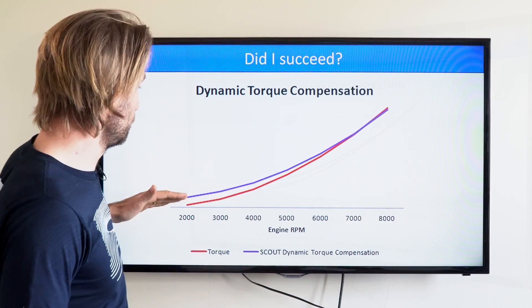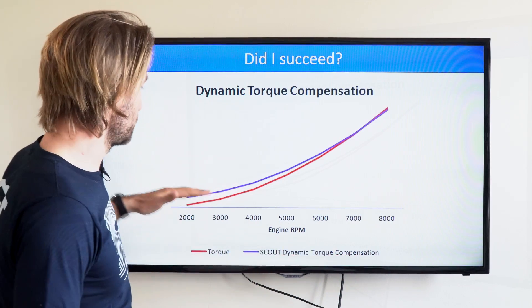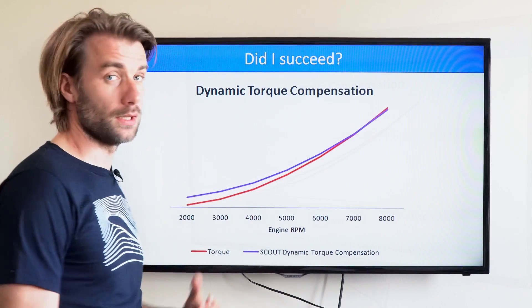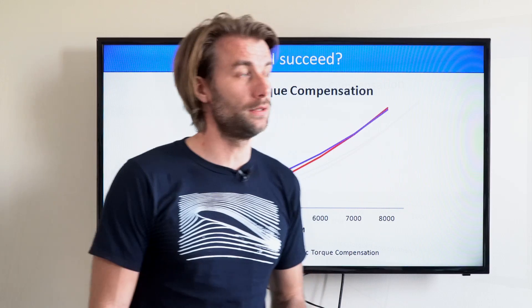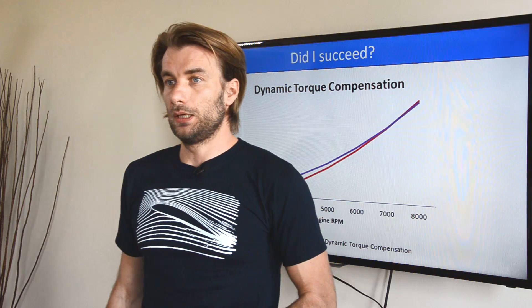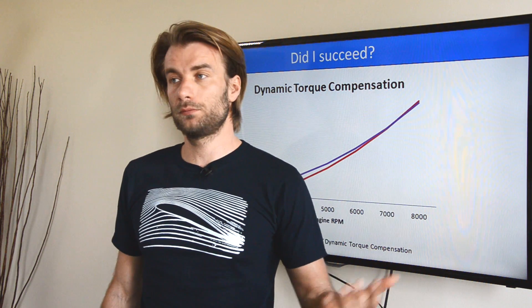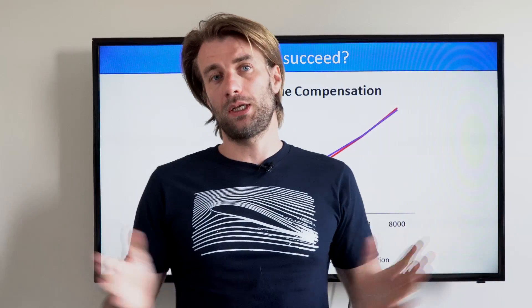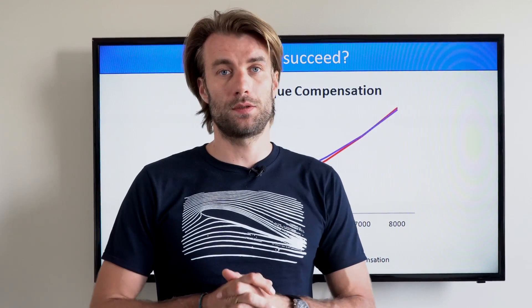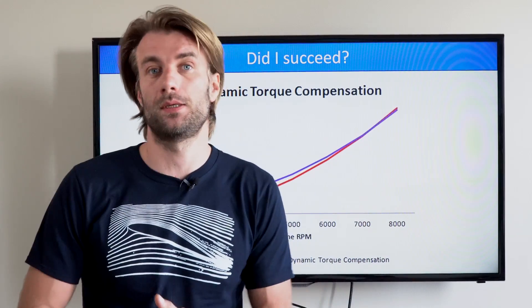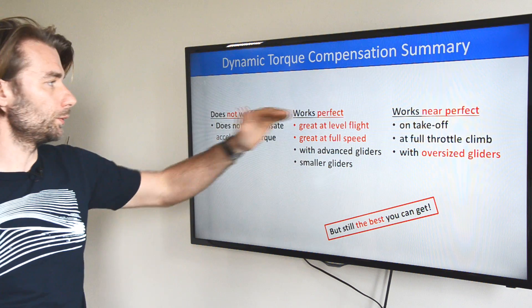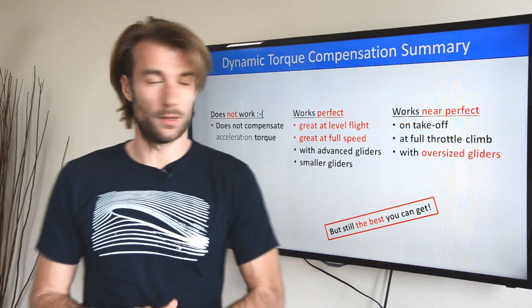Did I succeed? My goal was to have the dynamic torque compensation — the blue line — matching perfectly with the red line of torque. And yes, I honestly believe I did. You need to find out — go ask for a test flight on your own. The dynamic torque compensation is not fully perfect, so let me summarize how it behaves in the air: where it doesn't work, where it works perfectly, and where it works near perfect.